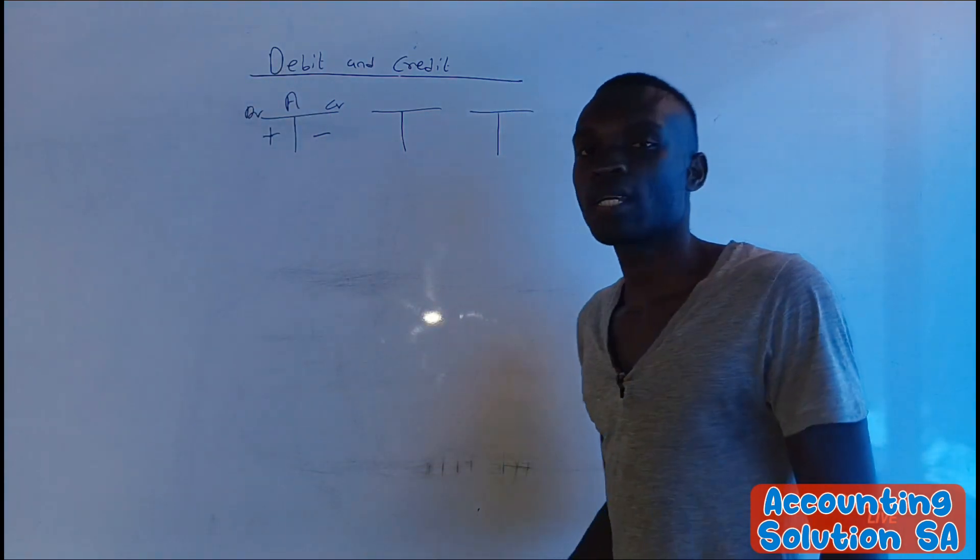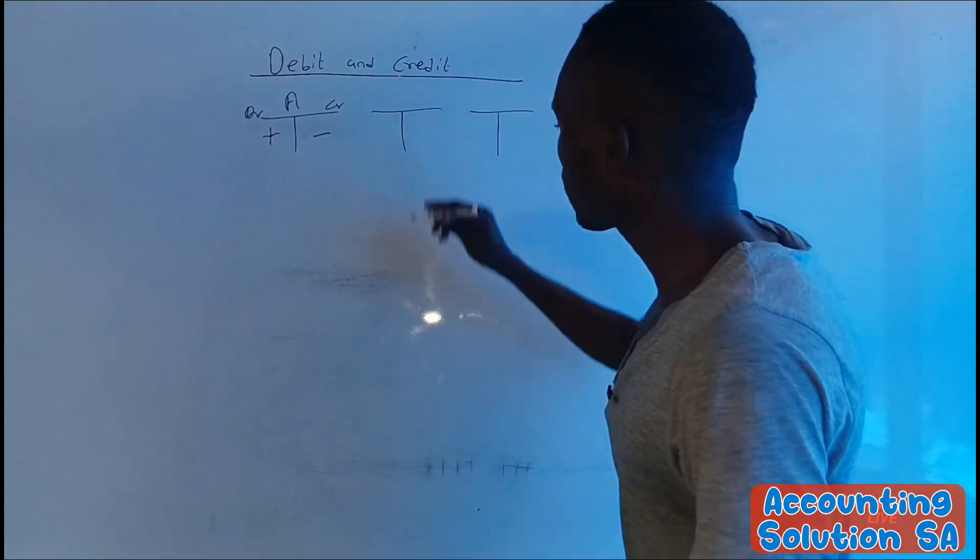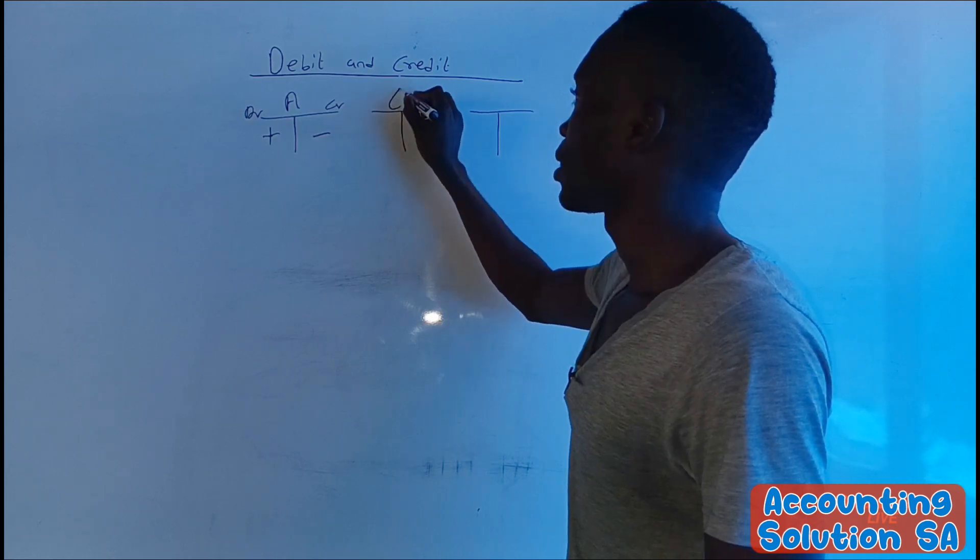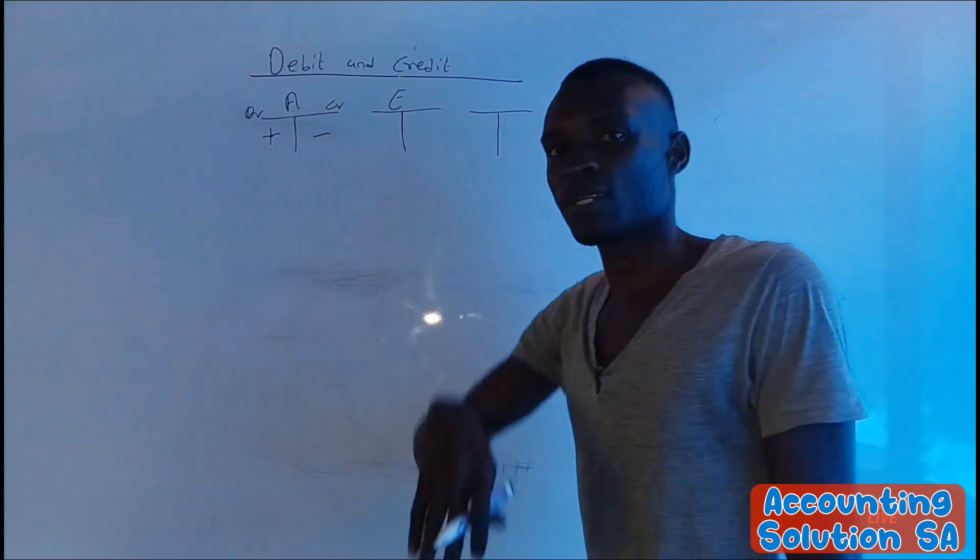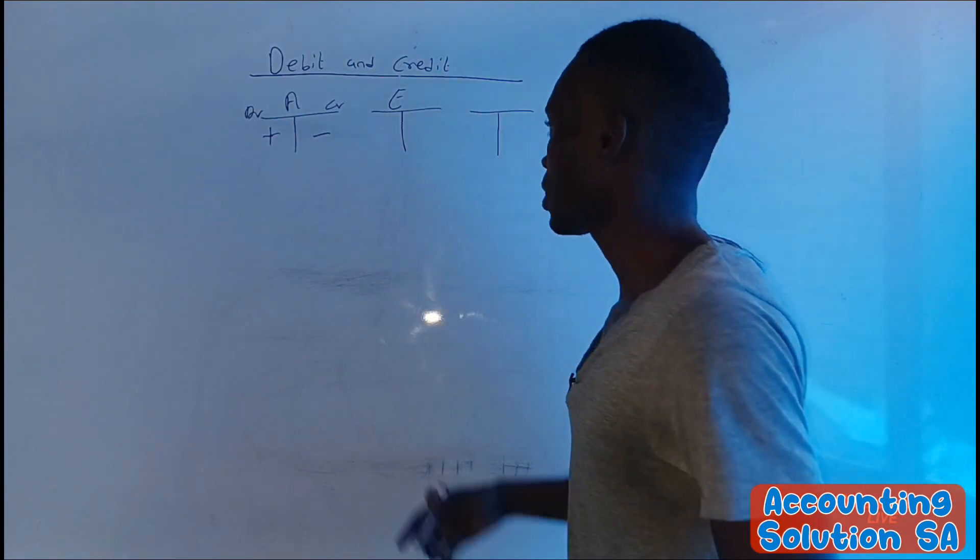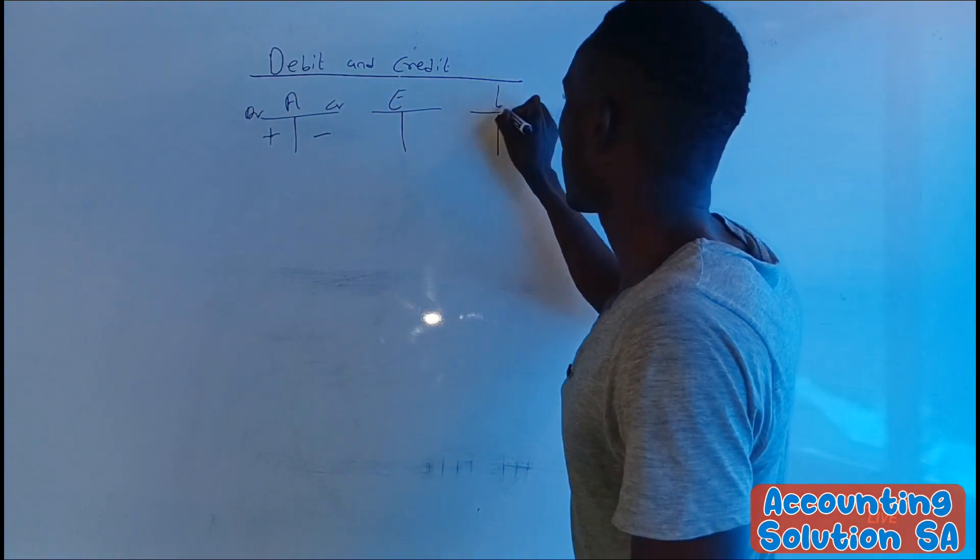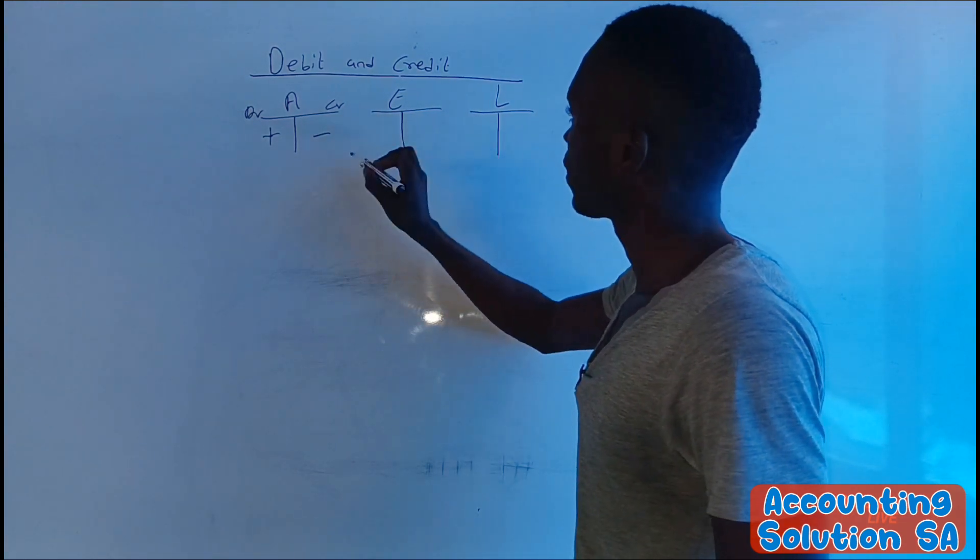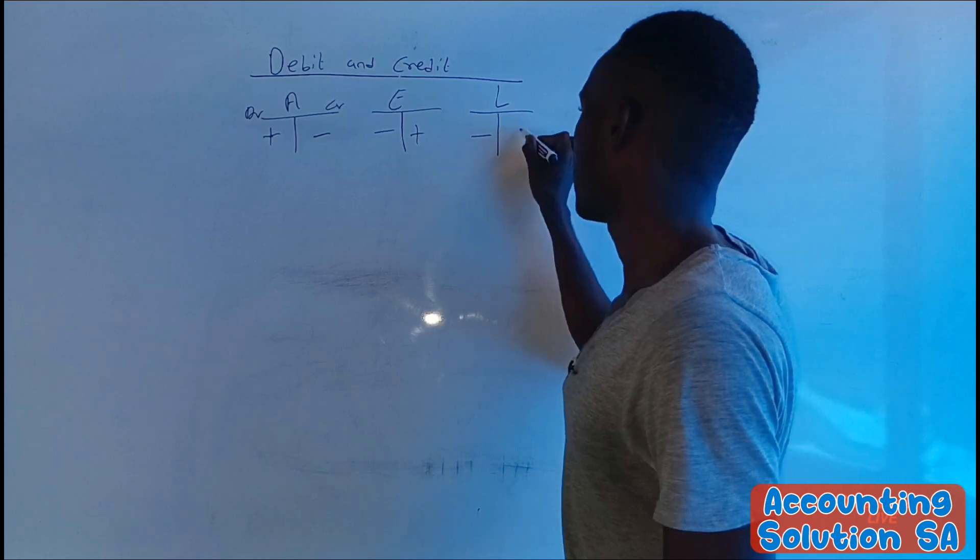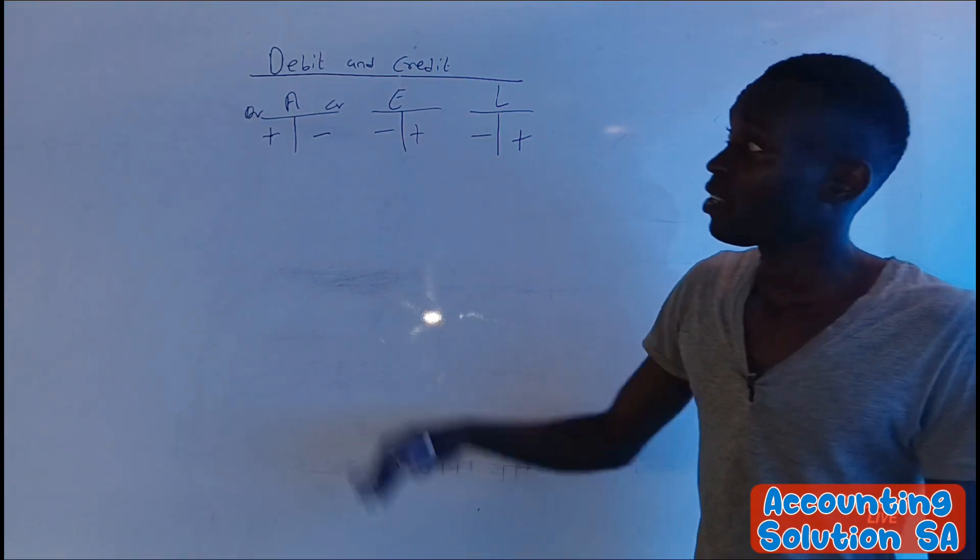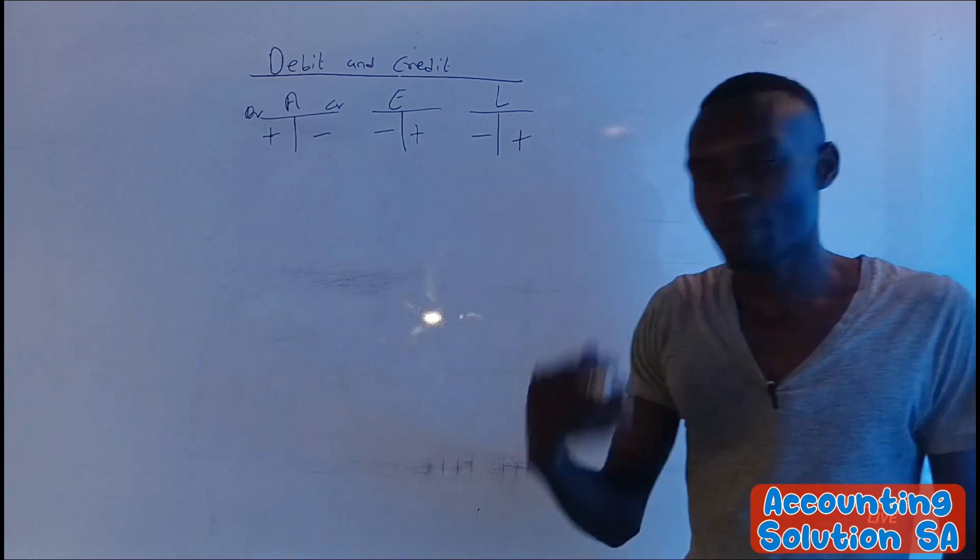But when it comes to equity, it's a different story now, which means that if we just say what is debit, I can't be able to answer that. Equity and liability do the same. It's going to be minus plus and minus plus. So debit and credit depends on the different account.